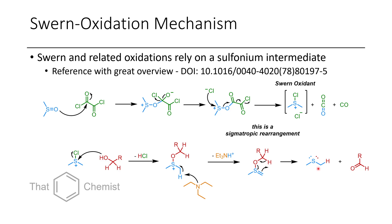One reason you might not want to do a Swern oxidation is that it produces dimethyl sulfide, which smells like rotting broccoli or cabbage. When I've worked in research labs, I usually had to work in a completely separate fume hood away from the rest of the lab when doing Swern oxidations. Historically, Swern oxidations were so commonly done that labs had a dedicated fume hood just for these, including its own separate rotary evaporator, because dimethyl sulfide can be detected at parts per billion or even parts per trillion — an extremely unpleasant smell for most people.